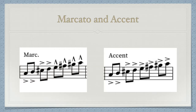Both marcato and accent are not bow strokes. They are articulation markings which require emphasis. The notation for marcato can be a horizontal wedge or a vertical wedge, or the abbreviation mark on the note. You will usually see a horizontal wedge for an accent. A vertical wedge might appear to require greater loudness and sharper attack than the horizontal wedge. Both marcato and accent require a player to play a particular note, a set of notes, a chord,